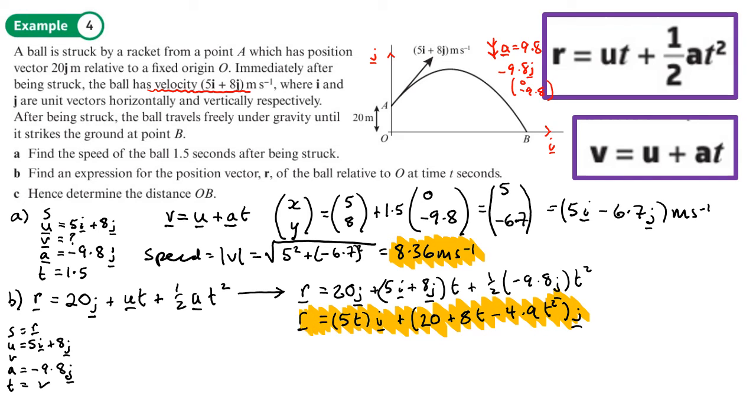Let me highlight answers - this is part a, part b. Now part c asks us to determine the distance from O to B. What's special about point B? Well, at this point the j part of the ball is going to be zero. That means 20 plus 8t minus 4.9 t squared equals zero.